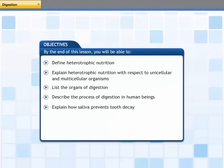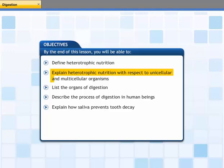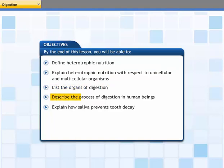This lesson is about nutrition in different types of organisms. By the end of this lesson, you will be able to: define heterotrophic nutrition, explain heterotrophic nutrition with respect to unicellular and multicellular organisms, list the organs of digestion, describe the process of digestion in human beings, and explain how saliva prevents tooth decay.